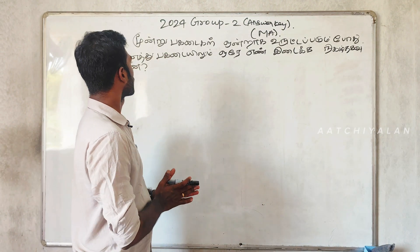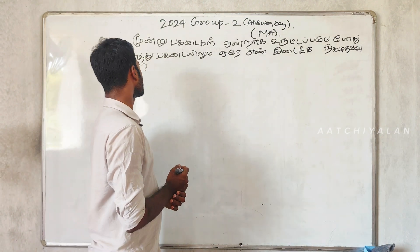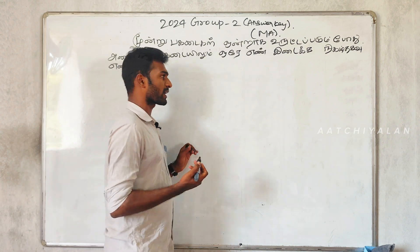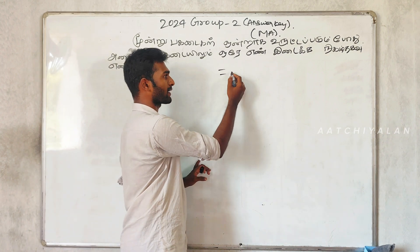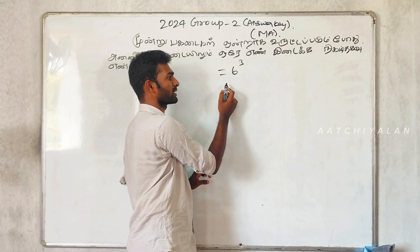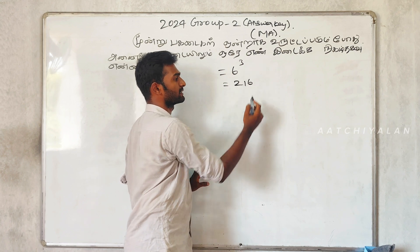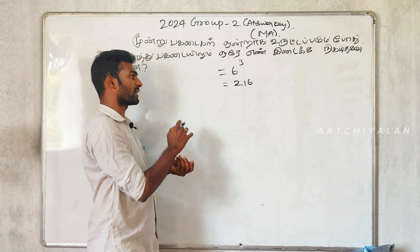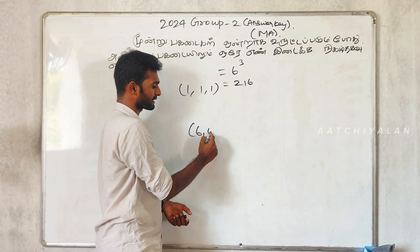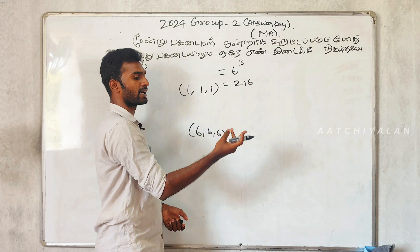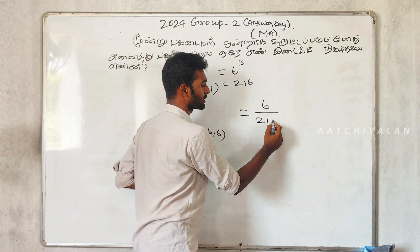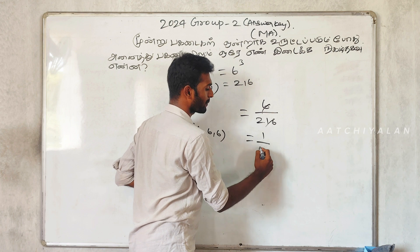Let's look at the second and third questions. The third one: if you take a cube, 6 cube gives 2 and 6. So 1, 2, 3, 4, 5, 6 — 6 is the answer. So 6 by 2 and 6; if we cancel, the answer is 1 by 36.